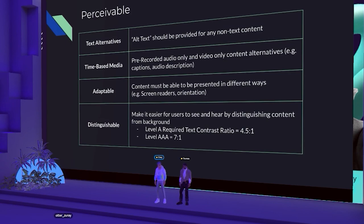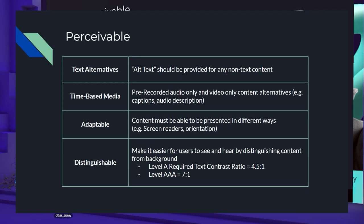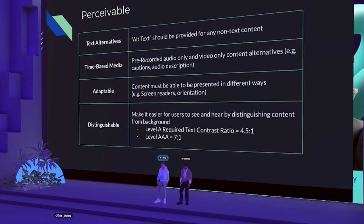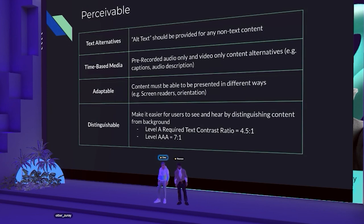Distinguishable — big thing on contrast ratios. For the most basic required level, text contrast ratio needs to be 4.5 to 1. For AAA, going above and beyond, you want it to be 7 to 1. This means the user can distinguish the color from the background more easily. For example, on these slides the background is dark gray/black and the text is white — if we had used darker text it would be really difficult for everyone to see. That sums up the perceivable requirements.